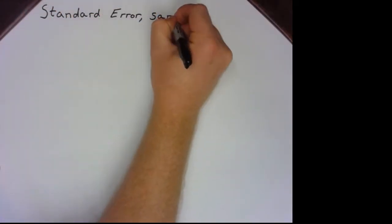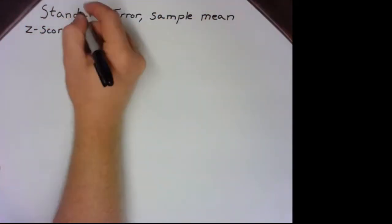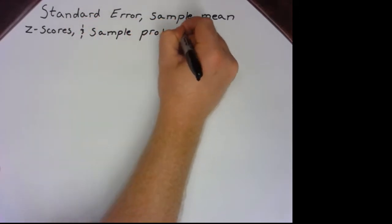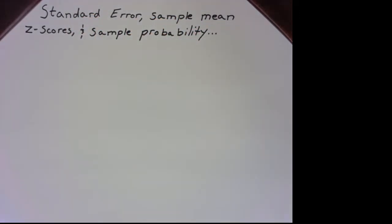In this video we'll be looking at how the standard error relates to sample mean z-scores and how to calculate the probability of getting a sample from random sampling.